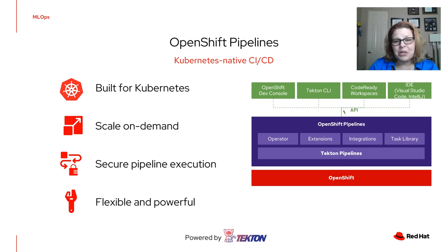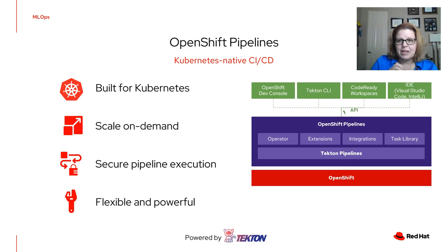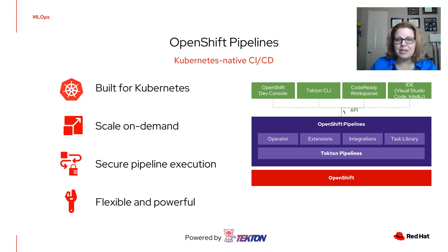To automate this process, let's look at how we can productionize ML models using OpenShift. This starts with a discussion of OpenShift Pipelines. OpenShift Pipelines are a cloud-native CI/CD solution based on Kubernetes resources, and they use Tekton blocks to automate deployments across multiple platforms by abstracting away the underlying implementation details. Tekton introduces standard custom resource definitions — CRDs — for defining CI/CD pipelines that are portable across Kubernetes distributions. These pipelines are built for Kubernetes, scale on demand, provide secure pipeline execution, and are flexible and powerful. Let's now look at data and ML pipelines.